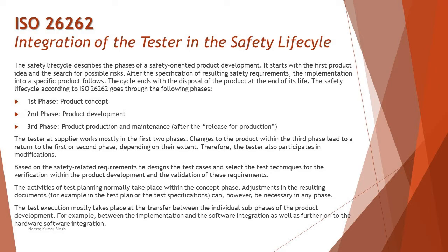This safety life cycle according to ISO 26262 goes through the following phases. It generally comprises three different phases. The first phase is product concept, which is generally about planning — relating to conventional methods. The second phase is product development, when the product gets developed and implemented.